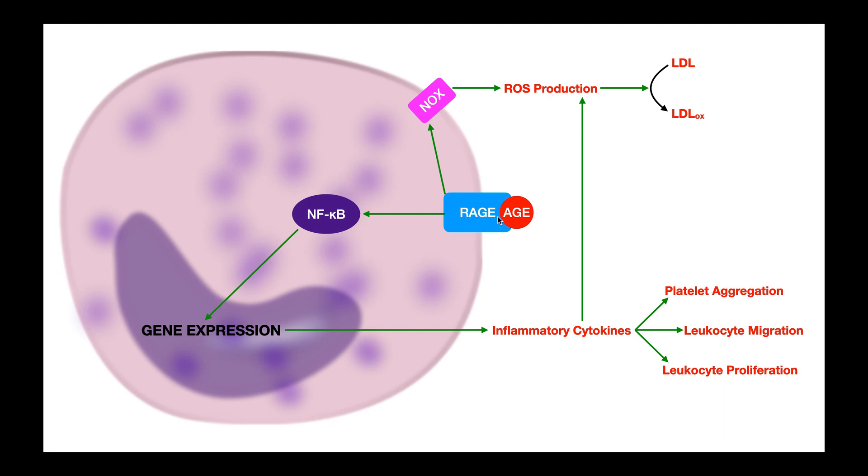Another pathway that A1C can activate through RAGE is the NF-kappa-B pathway. I won't go into too much detail with this because we discussed it in a previous video, but it suffices to say that NF-kappa-B, which is a transcription factor in immune cell cytoplasms, can actually go into the nucleus and induce gene expression of all sorts of inflammatory cytokines. These inflammatory cytokines do a number of things, one of which is further increase the production of reactive oxidative species.